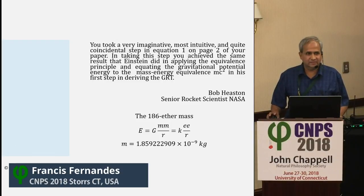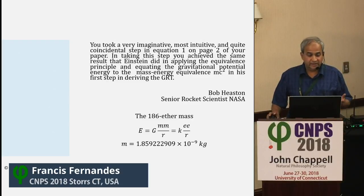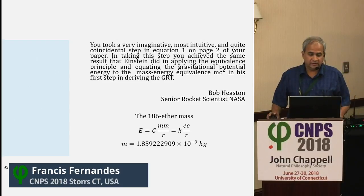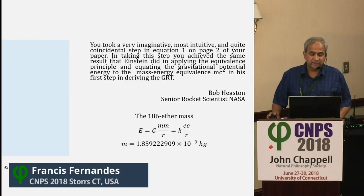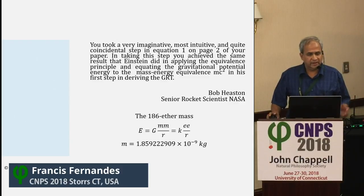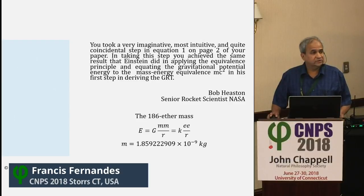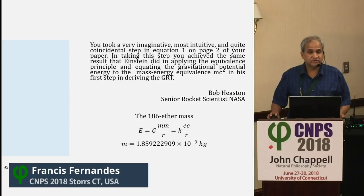Ten years ago at the University of New Mexico, David Yelster linked me up when I was in India — it was one of the first live video conferences. I took an imaginative, intuitive and coincidental step in correlating Newton's equation with Coulomb's equation. By cancelling out terms and known constants, I got a mass of 1.86 times 10 to the power minus 9 kilograms. I call this the ether particle. If there is some equality between the electromagnetic charge and magnetism with the gravitational force fields, the mass of ether is 1.86 times 10 to the power minus 9 kilograms.